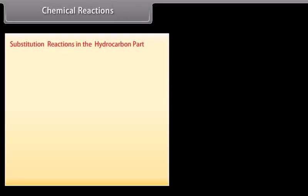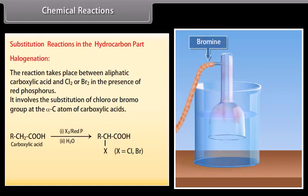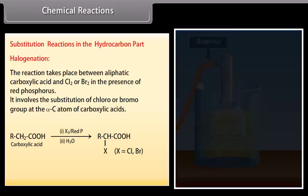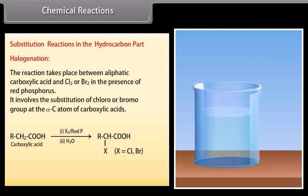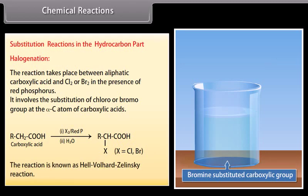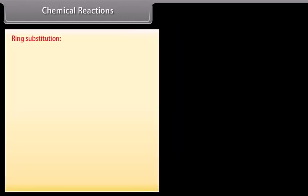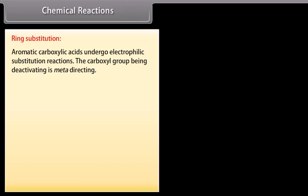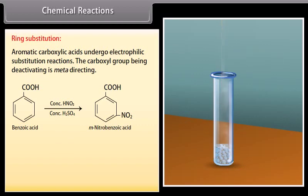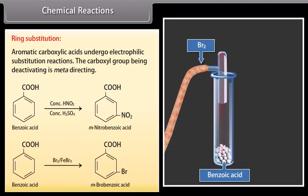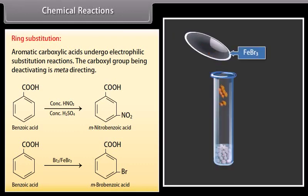Substitution reactions in the hydrocarbon part. Halogenation: the reaction takes place between aliphatic carboxylic acid and chlorine or bromine in the presence of red phosphorus. It involves the substitution of a chloro or bromo group at the alpha carbon atom of carboxylic acids. The reaction is known as the Hell-Volhard-Zelinsky reaction. Ring substitution: aromatic carboxylic acids undergo electrophilic substitution reactions. The carboxyl group, being deactivating, is meta-directing. On adding concentrated nitric and sulfuric acid to benzoic acid, it is converted into meta-nitrobenzoic acid. On adding bromine and ferric bromide to benzoic acid, it is converted into meta-bromobenzoic acid.